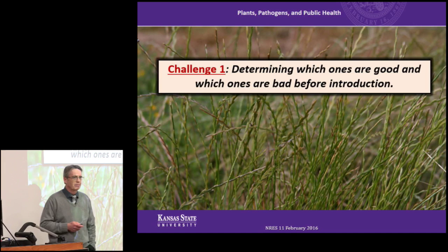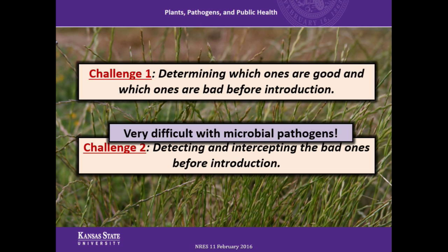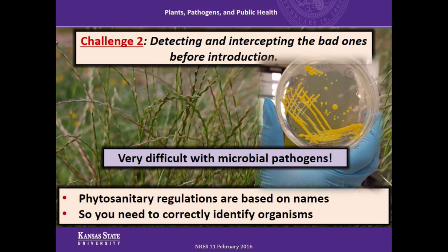The second challenge is detecting them and intercepting the bad ones before they're introduced. That can be really difficult when we're dealing with microbial pathogens. Phytosanitary regulations — the regulatory apparatus we have in place to protect plant systems — is based on the name of the organism. So you need to correctly identify the organism if you're going to successfully keep out the bad ones.